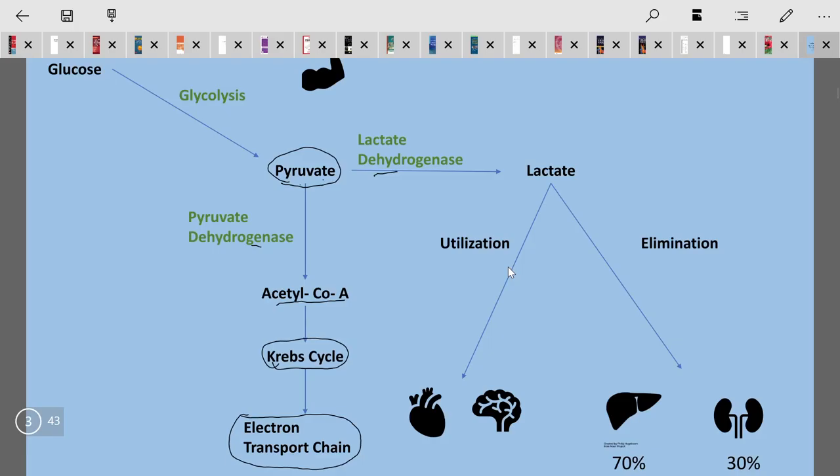This is mainly seen in the anaerobic pathway. Lactate can be utilized by the heart and brain, and 70% of lactate is eliminated in the liver and 30% by the kidneys.